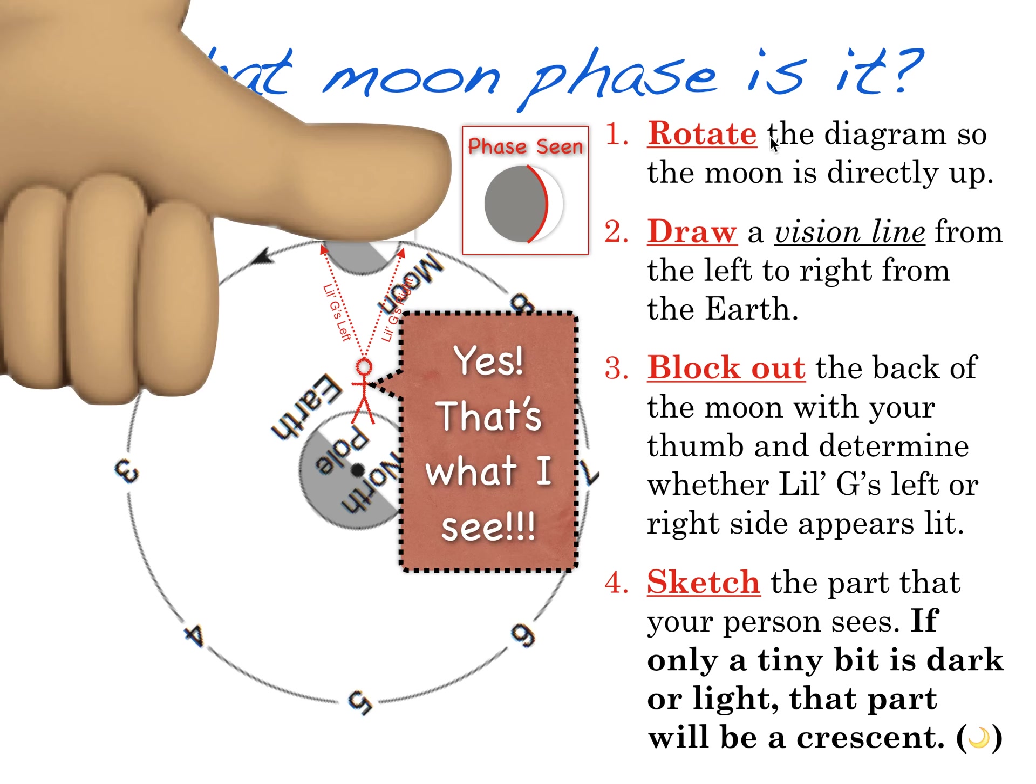So if you rotate the diagram so the moon is directly up, you're perfect. Make sure you draw a vision line from the left and the right and use your rule of thumb to block out anything on the outside of the orbit. Finally, you're going to sketch what it is that you see. If there's a tiny piece of either lit or shaded, that's going to make a crescent on that side. To make a crescent, start from the middle of the top of the circle and draw a curved line down the side that has just a tiny piece. In this case, it was on the right. Okay, and then shade in appropriately as seen by little g.